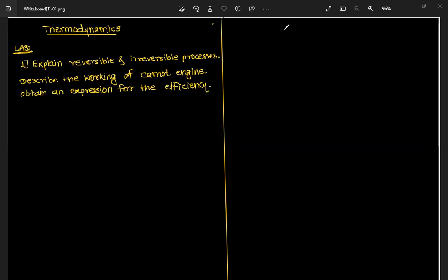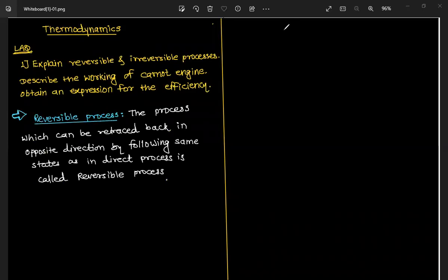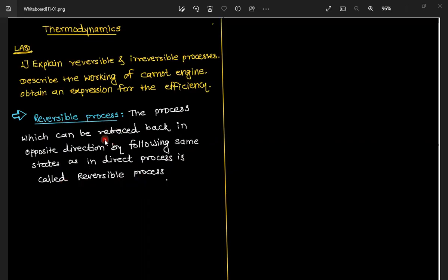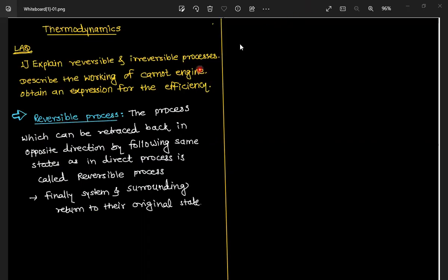Let's start. First, the reversible process. In the name itself — reversible — the process which can be retraced back in the opposite direction by following the same states as in the direct process is called a reversible process.